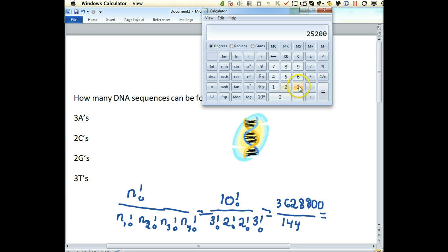You could also, if you wanted, put in the three factorial times two factorial times three factorial times two factorial to get your bottom number. So it's just a good way to check yourself.